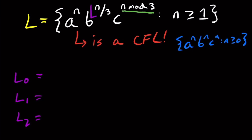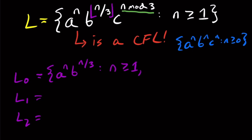One other thing we should note is that n divided by three may not be an integer, so I'm going to take the floor of that so it always is an integer, because we can't have one and a half b's or something. So L0 is going to be when n is a multiple of three. If n is a multiple of three, then there are no c's in the string at all, because any multiple of three mod three is zero. So we have a to the n, b to the n over three, and I don't need the floor here because we know n to be a multiple of three, such that n is at least one and n is equivalent to zero mod three.